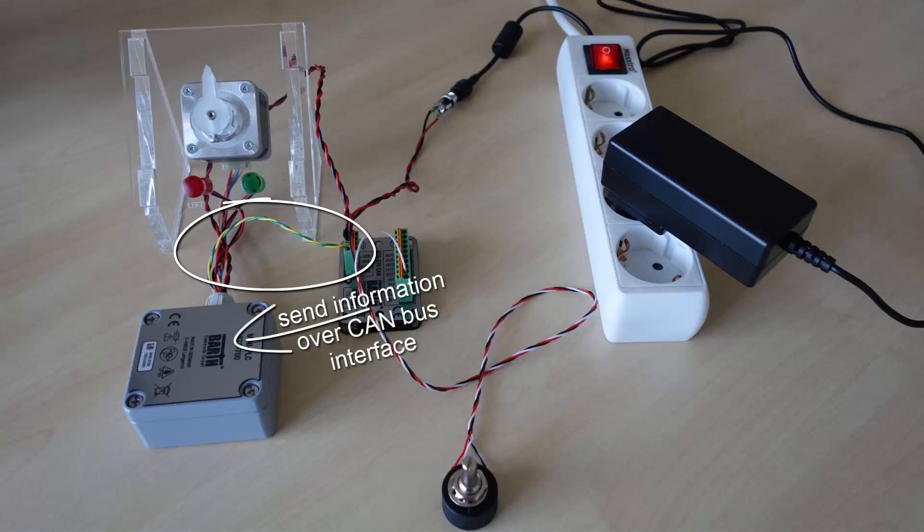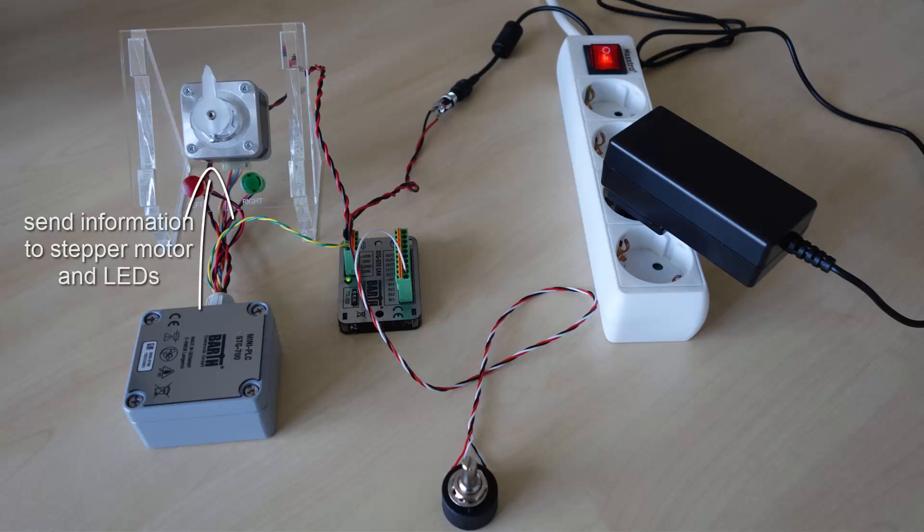The STG 700 STEP will transmit the received information to the motor. Now the LEDs which are connected to the STG 700 will light up depending on the rotation direction.